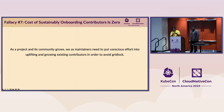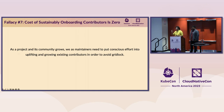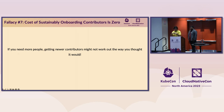As a project and its community grows, we as maintainers need to put conscious effort into uplifting and growing existing contributors to avoid gridlock. If we do this well, it will help sustainability and help new contributors because they'll have more people to reach out to. In the Kubernetes community, one-on-one mentoring does not scale, so we've started doing mentoring cohorts and grown new maintainers into different areas of the project. There's still a lot of work to do, but these are steps in the right direction. If you need more people, getting newer contributors might not work the same way if your project is sufficiently large.